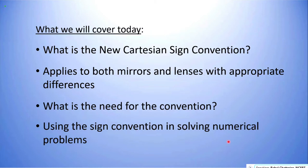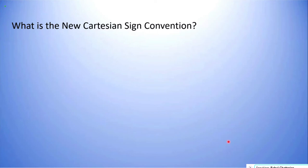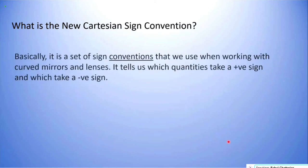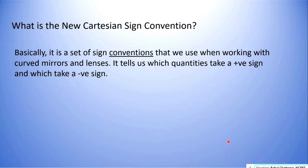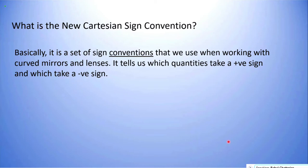So let's begin with the new Cartesian sign convention — what exactly is it? Basically, the new Cartesian sign convention is a set of rules, a set of conventions, that help us in giving signs — positive and negative — to different quantities that we come up with when we work with lenses and mirrors in geometrical optics. Remember, this is just a convention, a practice. These are not nature's laws. These are things made to make life easier when we do numerical problems.